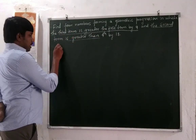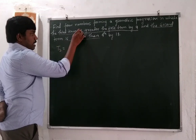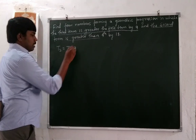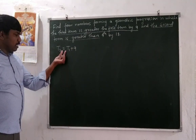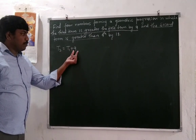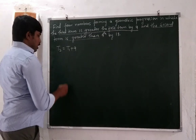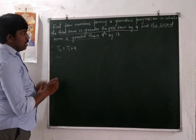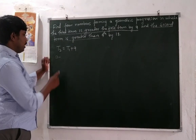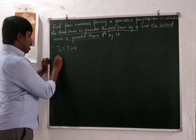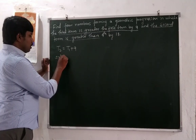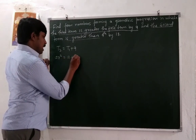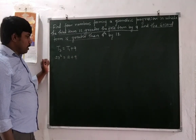The third term is greater than the first term by nine. What is T3? In a geometric progression, T3 is a into r squared (a·r²). So the equation is: T3 = T1 + 9, which gives ar² = a + 9. This is equation 1.